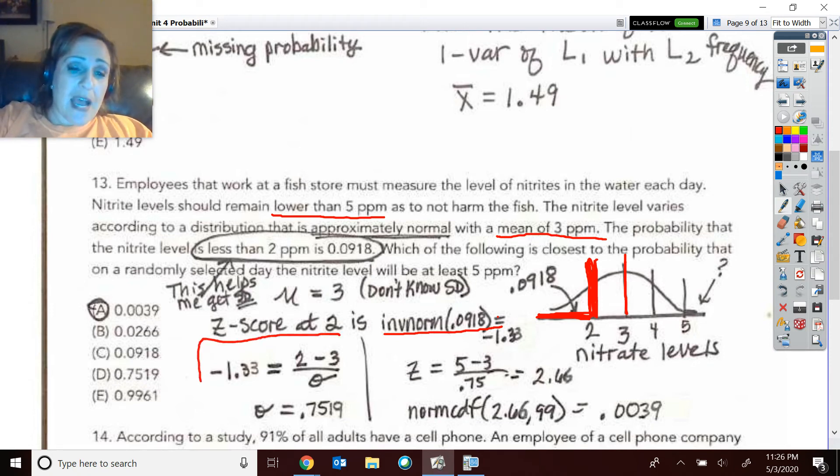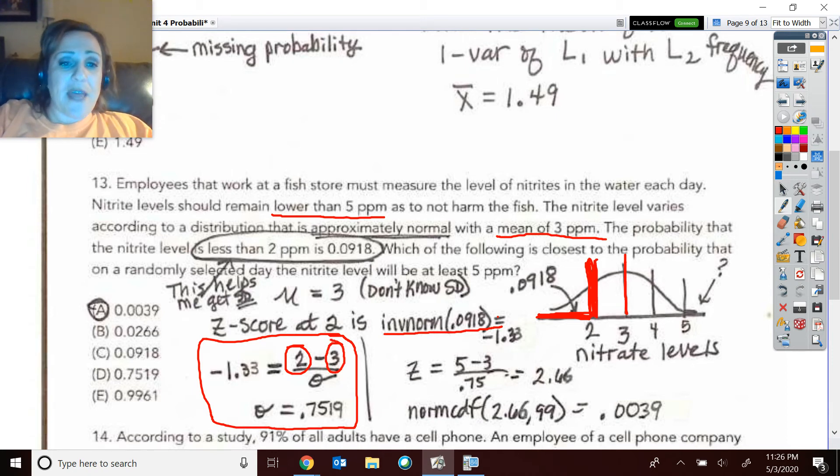So then I said, okay, now I can get my standard deviation because I have the x, 2 parts per million minus the mean over the standard deviation. And that's at negative 1.33. So I solved and I got 0.7519 for the standard deviation.